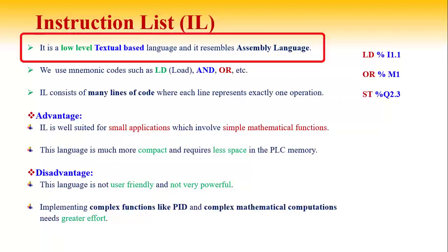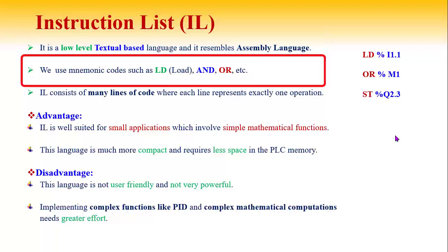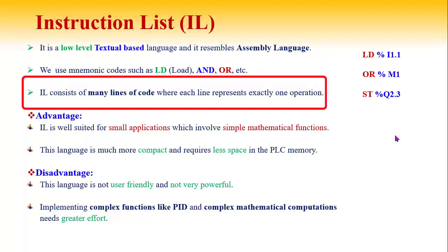Instruction List is a low-level textual-based language and it resembles assembly language. It uses mnemonic codes such as LD (load), AND, OR, etc. Instruction List consists of many lines of code where each line represents exactly one operation.